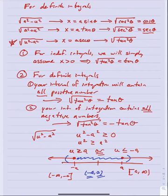Make your substitution, simplify your integrand in terms of theta, integrate that function which will usually be some combination of trig functions. Once you've found your antiderivative, use your reference triangle to substitute x's back in and get your antiderivative answer in terms of x. That's a good place to stop - let me know if you have any questions over this.